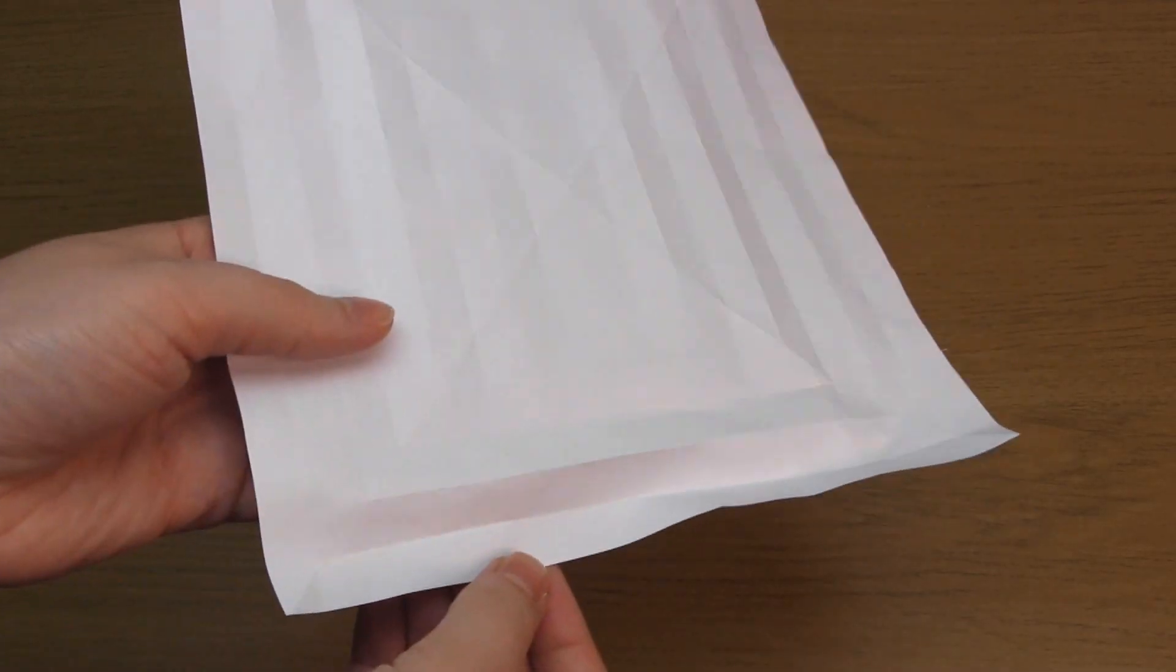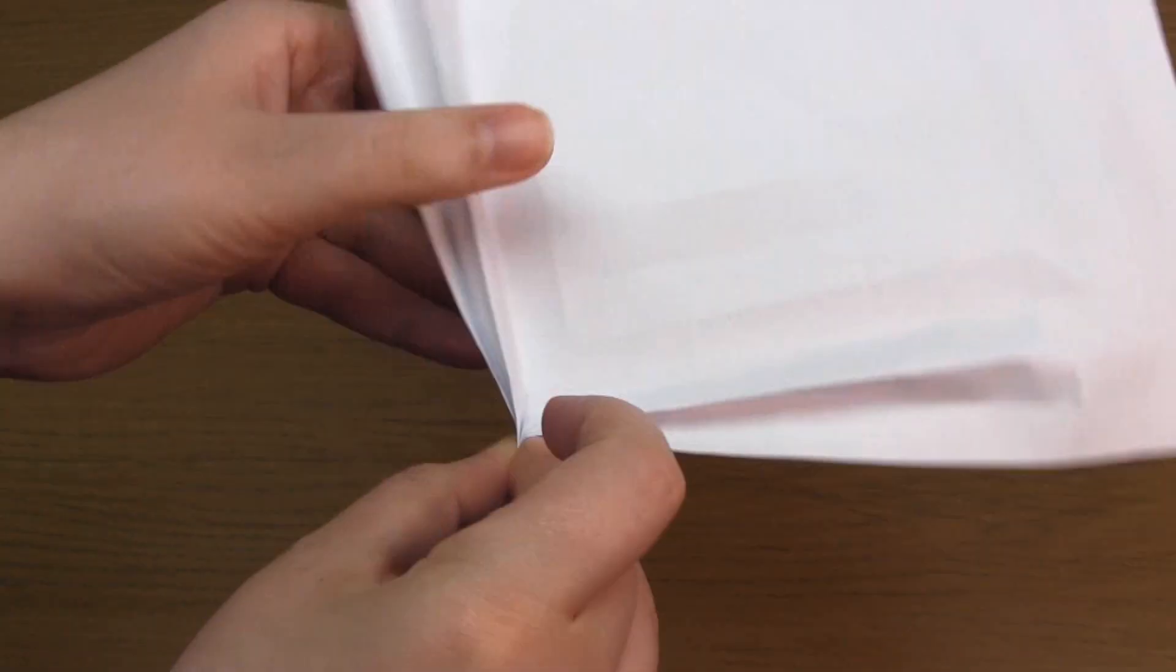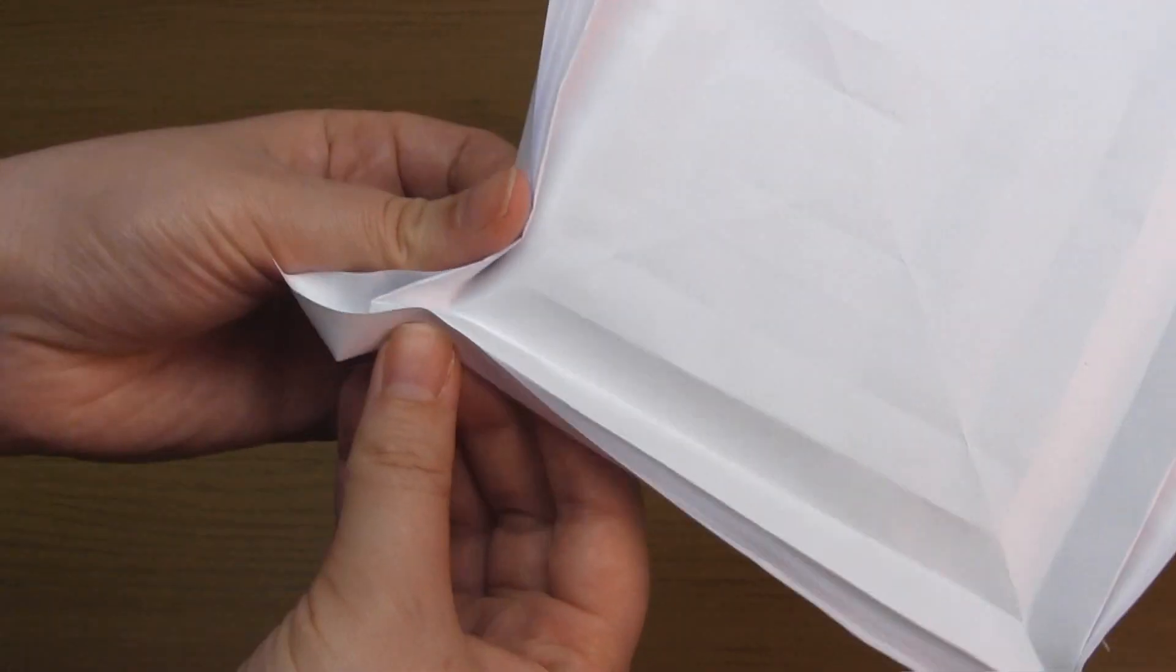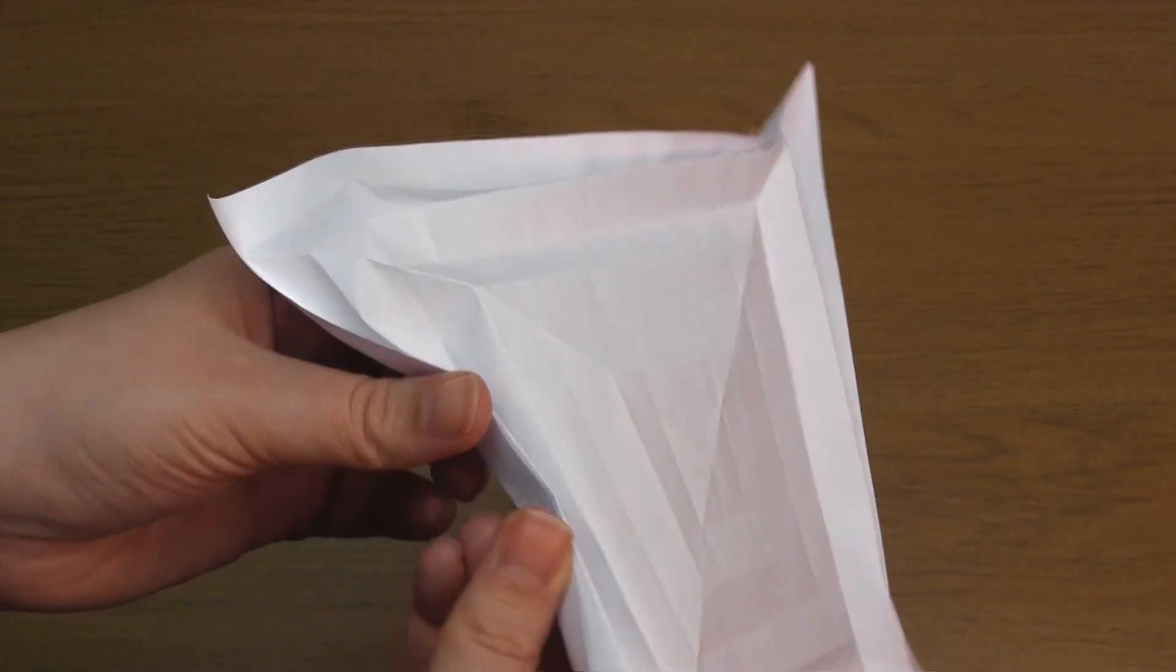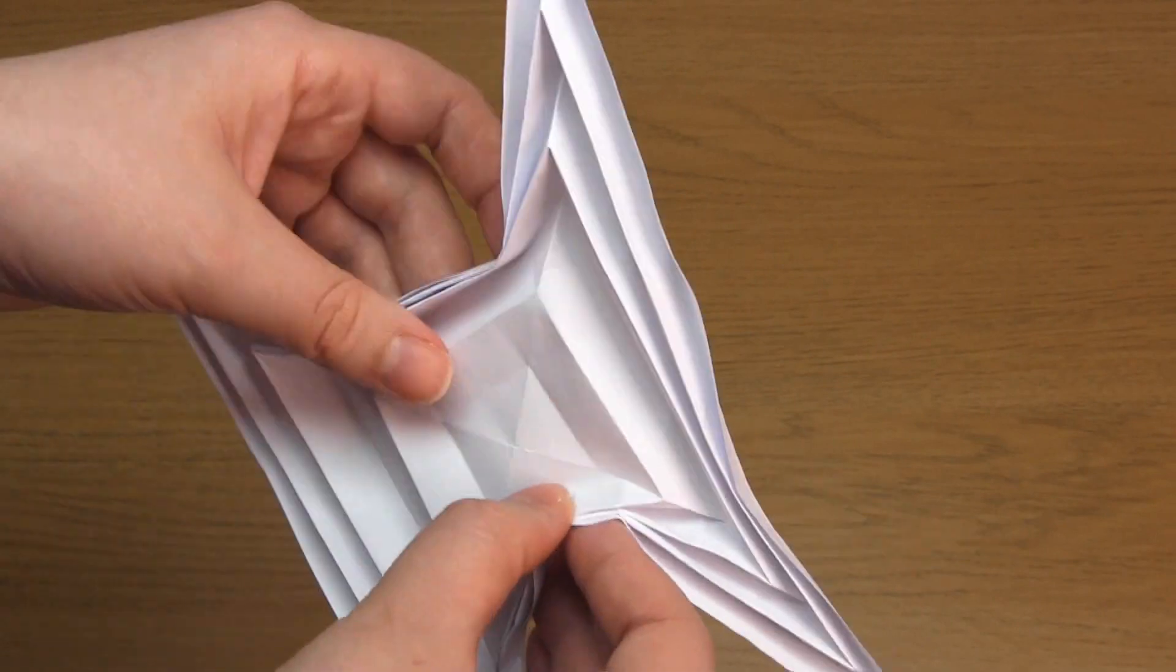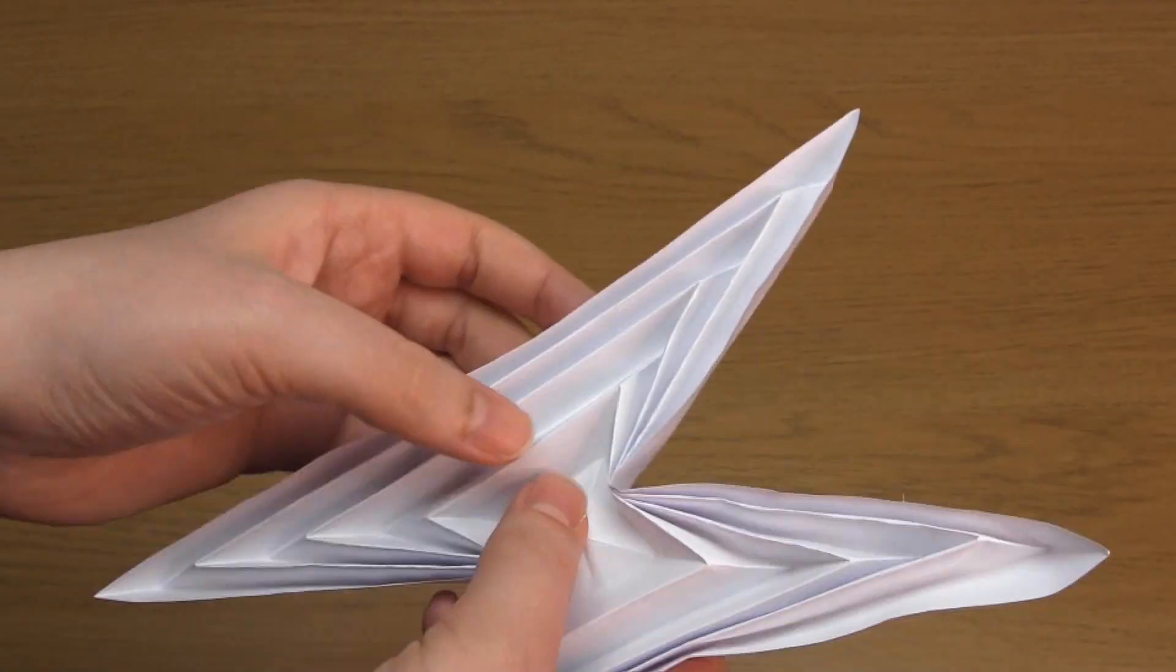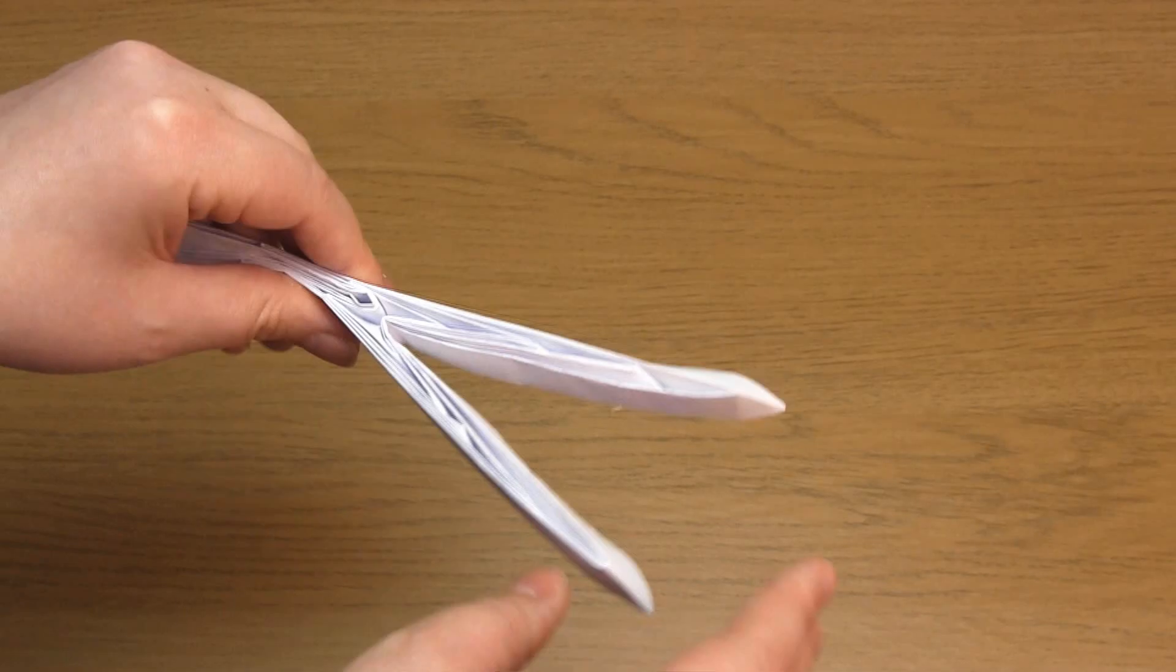This can be a bit tricky along the diagonal folds, but it will all fit into place. Since the valley and mountain folds alternate, you'll get a concertina effect within each triangle, as you can see. Once you've squashed it flat, all of the creases should be nice and crisp. And then you can open it out and you'll have a hyperbolic paraboloid.